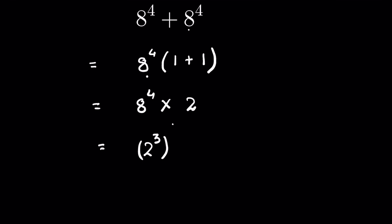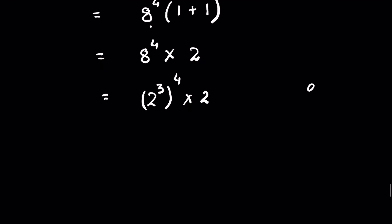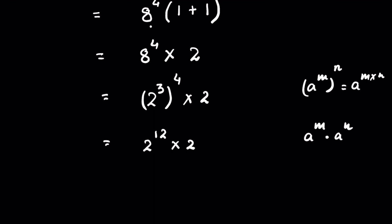Now 8 to the power 4 means 2 to the power 3, whole to the power 4, times 2. We know that a to the power m, whole to the power n, equals a to the power m times n. So 2 to the power 3, whole to the power 4, is 2 to the power 12, times 2. Since a to the power m times a to the power n equals a to the power m plus n, we get 2 to the power 12 plus 1, which is 2 to the power 13. So this is your answer.